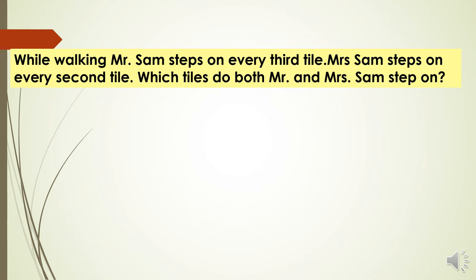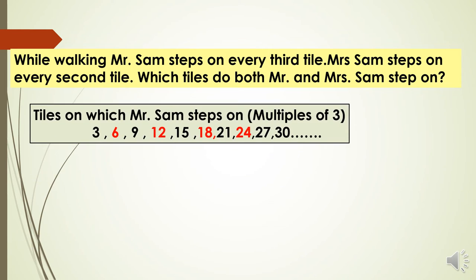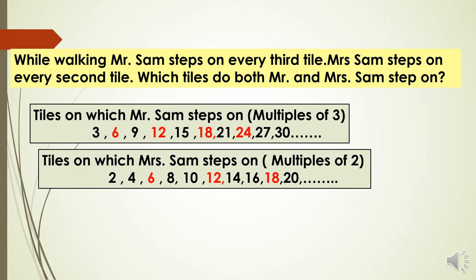Consider this question: while walking, Mr. Sam steps on every third tile and Mrs. Sam steps on every second tile. Which tiles do both step on? The tiles Mr. Sam steps on are the multiples of 3: 3, 6, 9, 12, 15, 18, 21, 24, 27, 30, etc. The tiles Mrs. Sam steps on are the multiples of 2: 2, 4, 6, 8, 10, 12, 14, 16, 18, 20, etc. Some tiles are common to both.